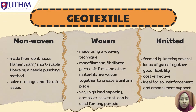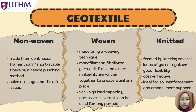Geotextile can be classified into three major fabrics based on its appearance and use. One of the fabrics is woven geotextile, which is made using a weaving technique where individual threads such as monofilament, fiber-related yarns, slit films, or other materials are woven together to create a uniform piece. It is ideal for separation and reinforcement purposes since it has a very high load capacity.